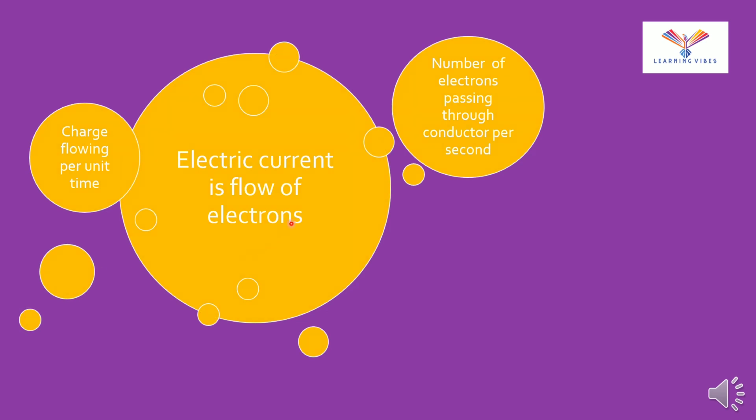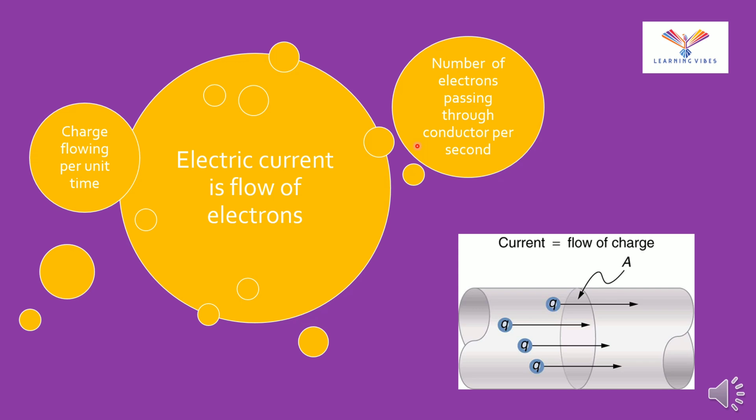Electric current is flow of electrons, or in other words we can say that charge flowing per unit time, or the similar definition is number of electrons passing through a conductor per second. Let's understand using this diagram. These are the charges flowing from this section to this section. So this is basically the flow of charge or the flow of electrons.